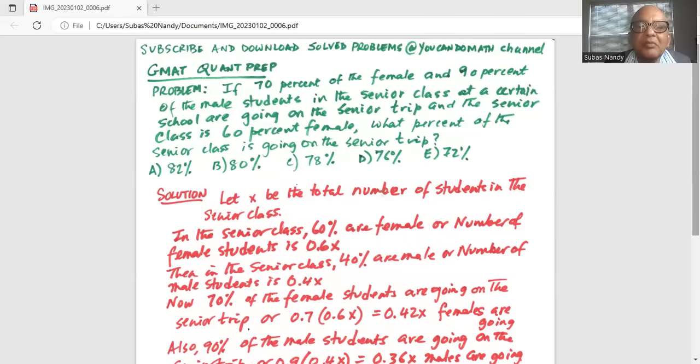If 70% of the female and 90% of the male students in the senior class at a certain school are going on the senior trip and the senior class is 60% female, what percent of the senior class is going on the senior trip?